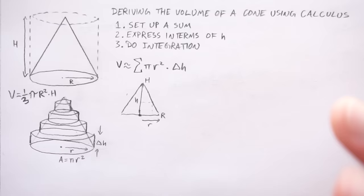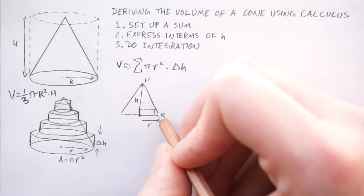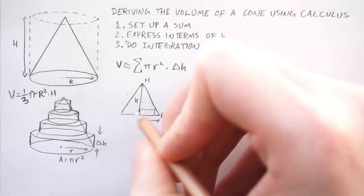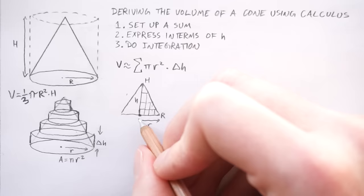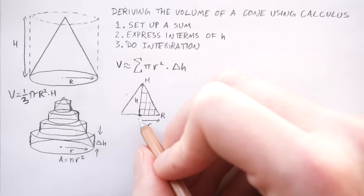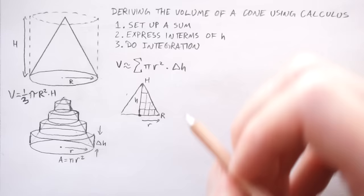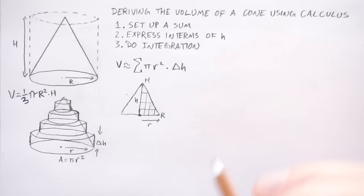So now my challenge to you is to work out what is the relationship between this little r and this little h. There's a bit of a hint, if you're 25% of the way up the height, you'll actually be 75% of the way up the radius. If you're half the way up the height, you're only 50% of the way up the radius. And if you're 75% up the height, you'll be 25% of the way along the radius. So because this is a straight line, there's a sort of inverse relationship. So my challenge to you is to find the expression that relates r to h here. You can pause the video now if you'd like to give it a go.